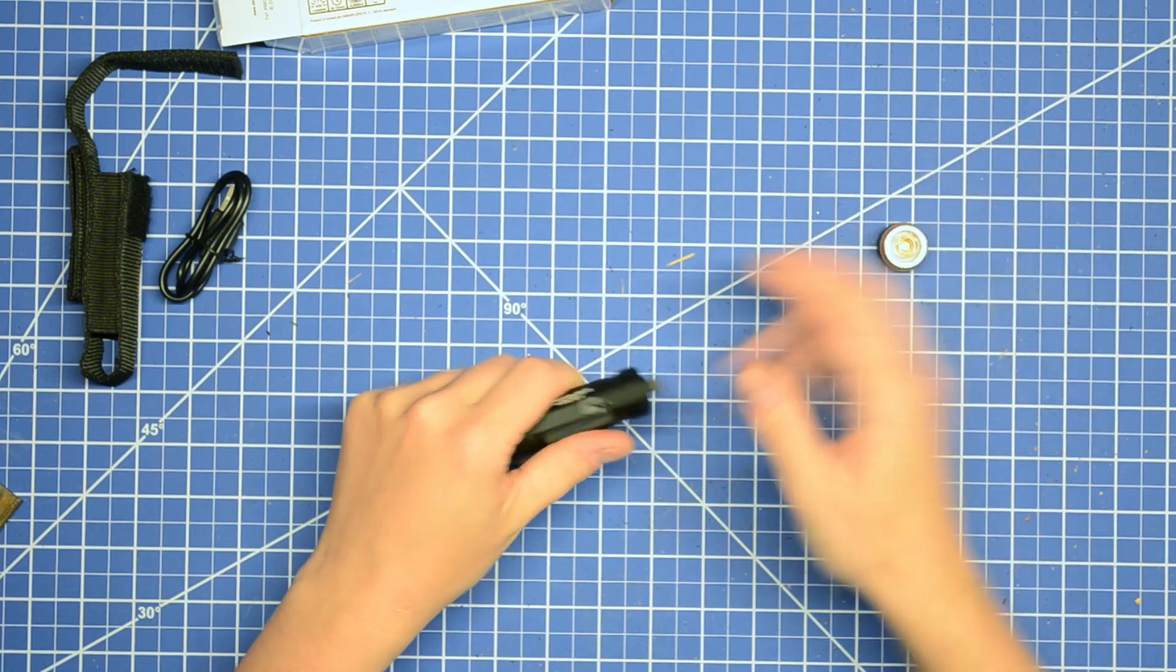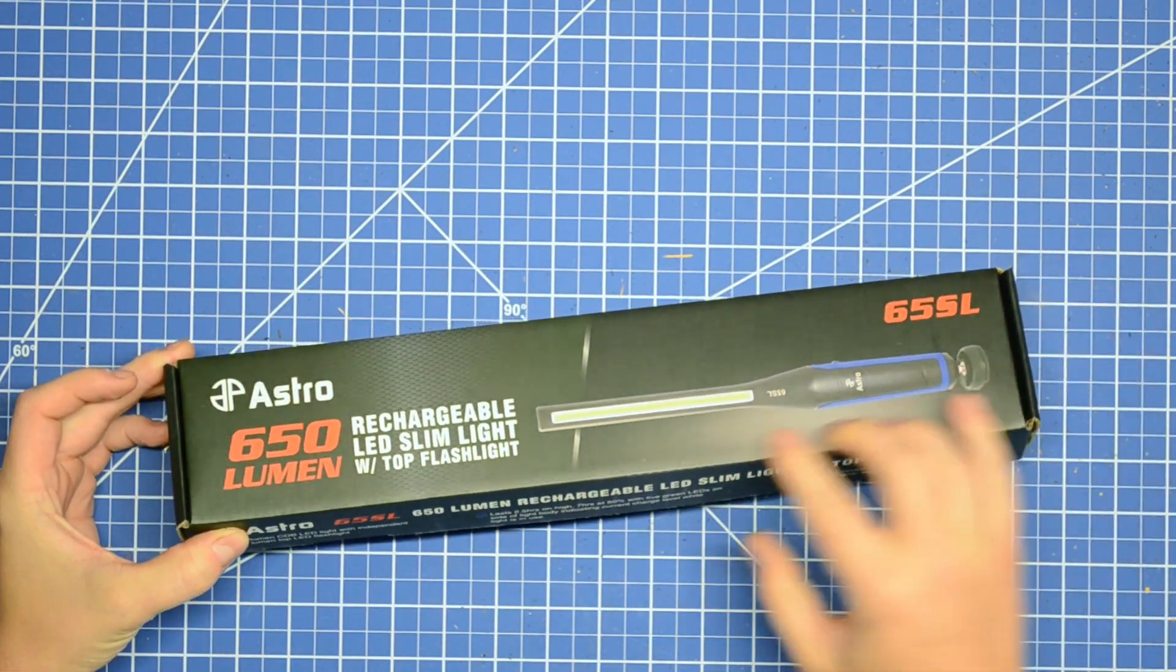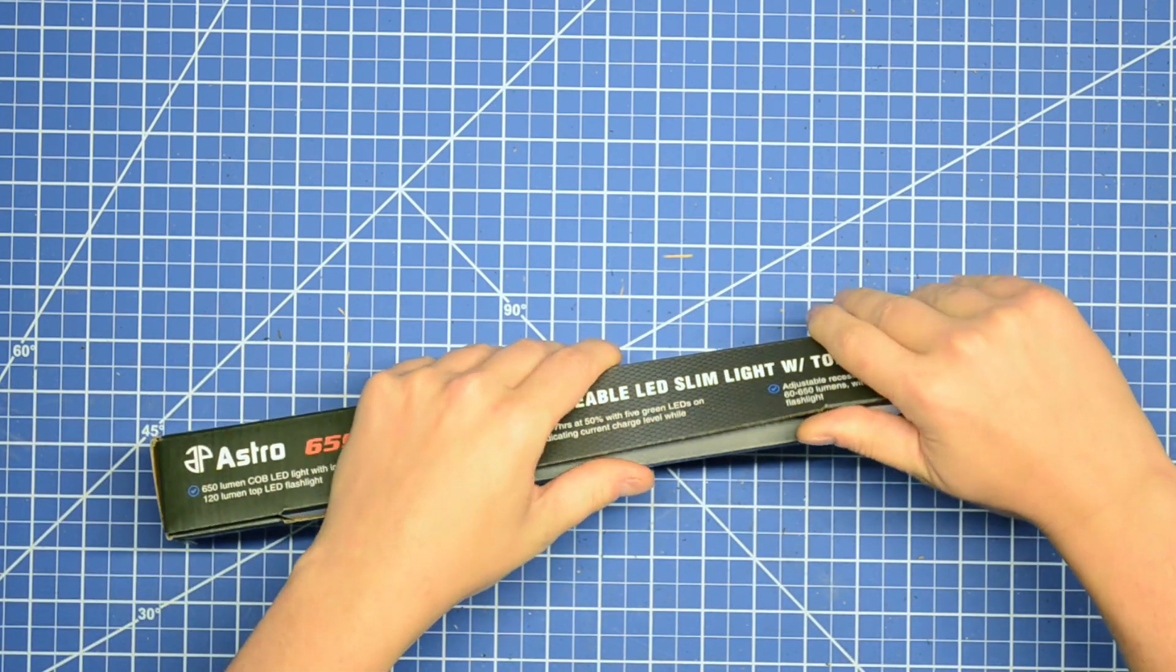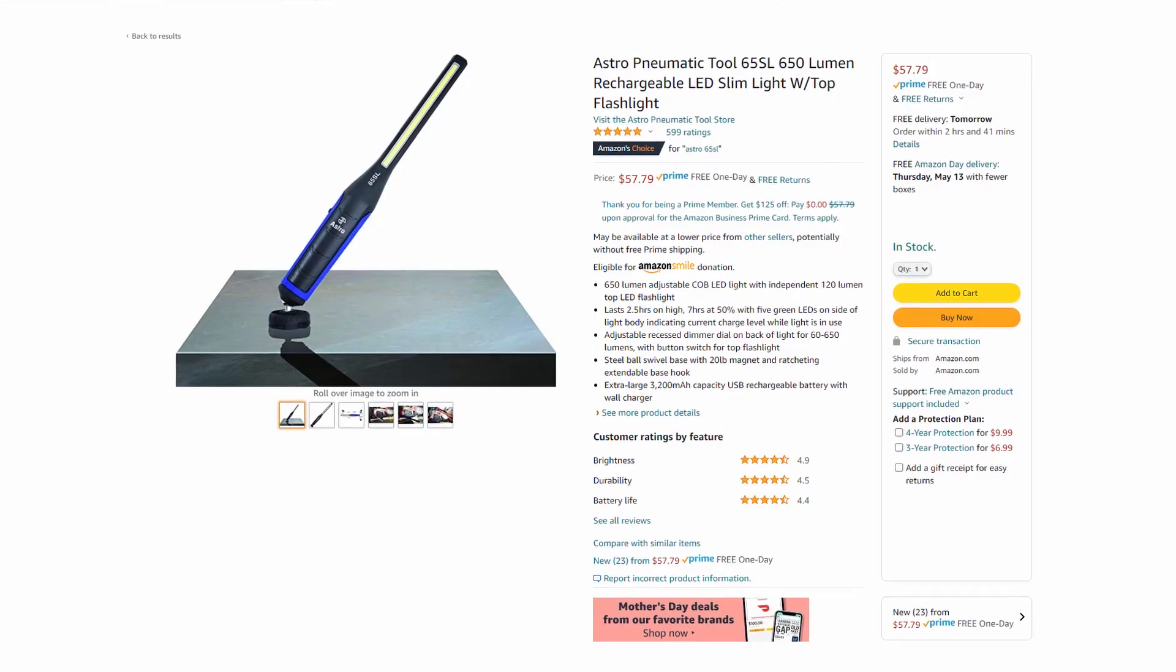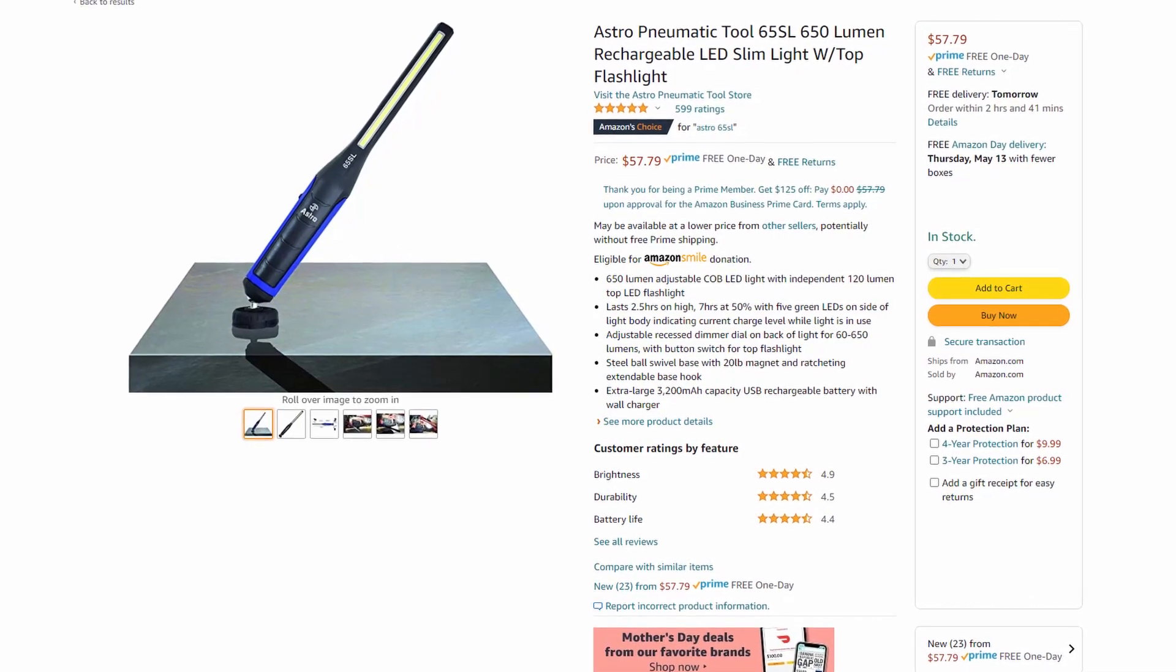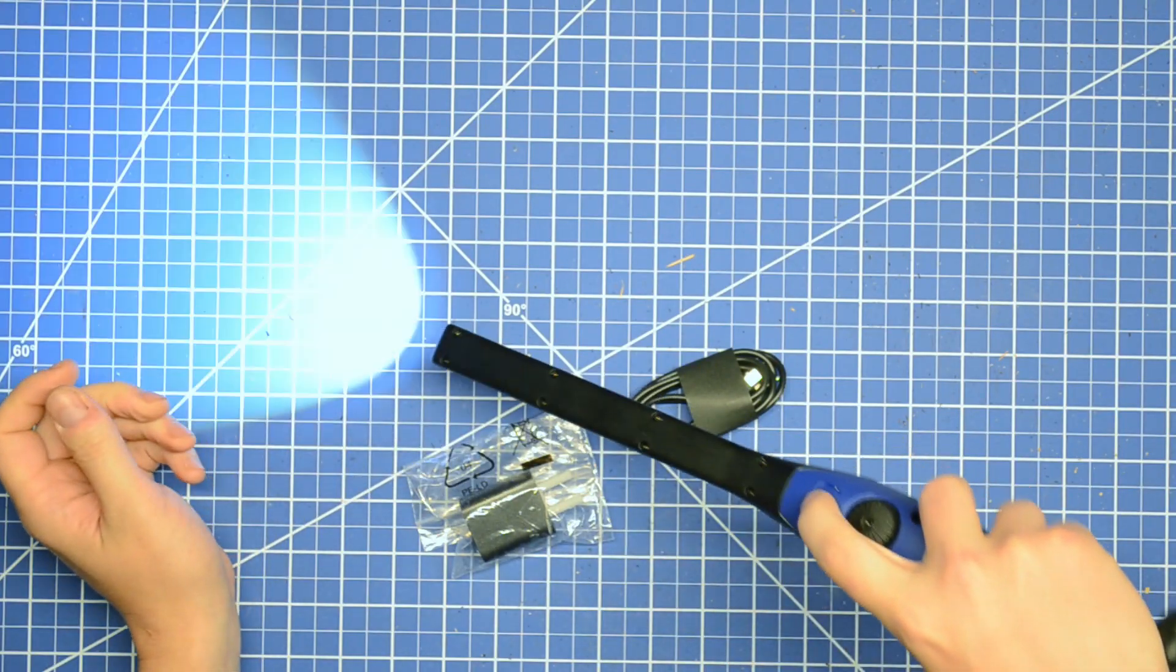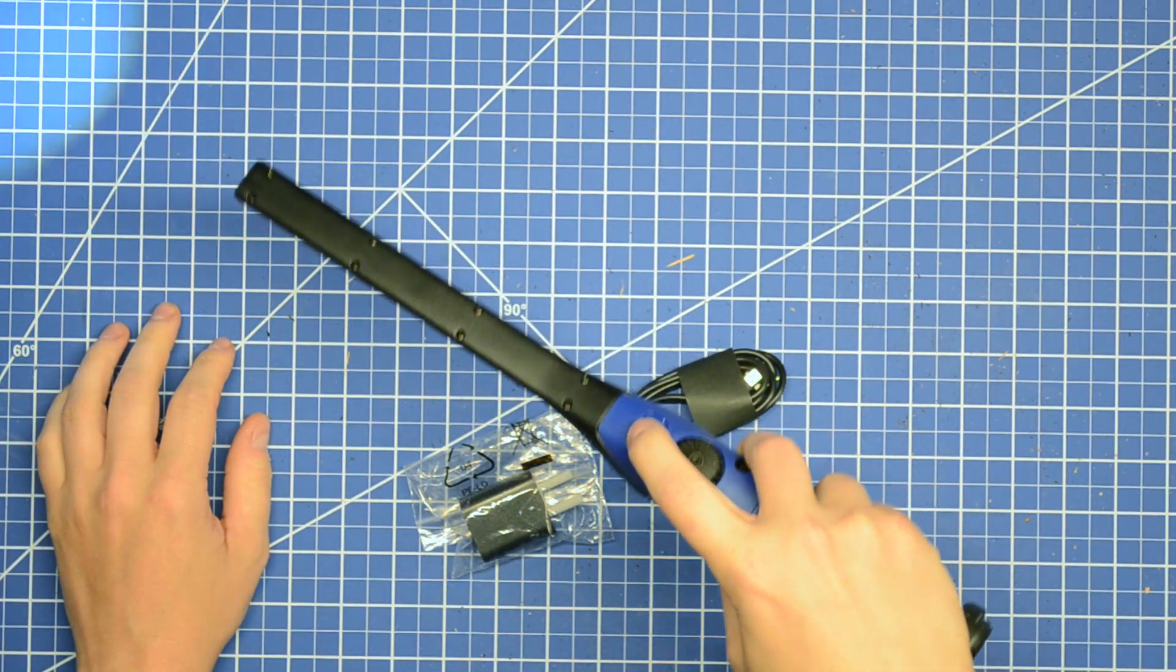Last for Astro we went with the 65SL which was at the time the highest sales rank light from Astro on Amazon. It advertises 650 lumens from the main light, 120 lumens from that top light, and that gives us an extra data point to calibrate our rig by having two different lumen levels. So we packaged these up to send them off and got started on our own light integration sphere in the meantime DIY style.